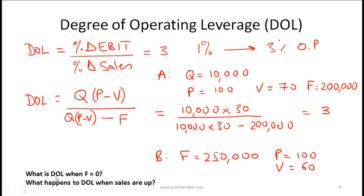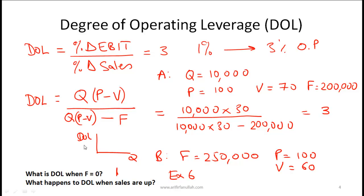If there are no fixed costs — F equals 0 — then degree of operating leverage simply becomes 1, meaning no fixed cost means no leverage. When sales go up, take a look at Exhibit 6 in the curriculum, which shows a picture of the relationship between quantity on the x-axis and degree of operating leverage on the y-axis. You can first work this out with these numbers and then refer to Exhibit 6.